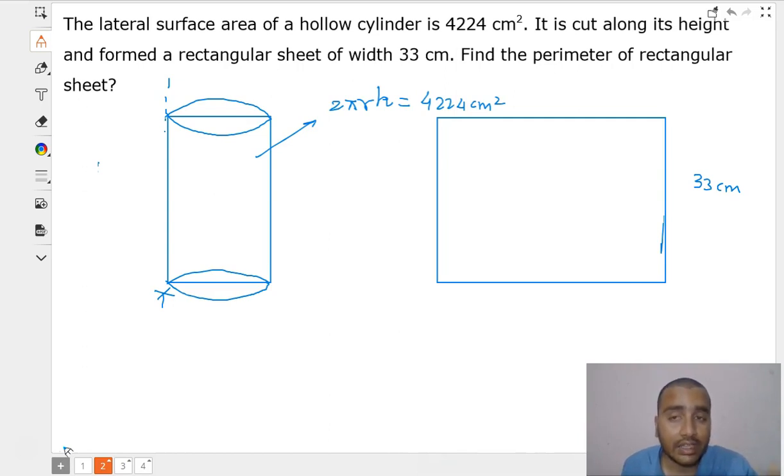The lateral surface area of the cylinder is 2πRh. We can also write the formula for the area of the rectangular sheet, that is length multiplied by width.